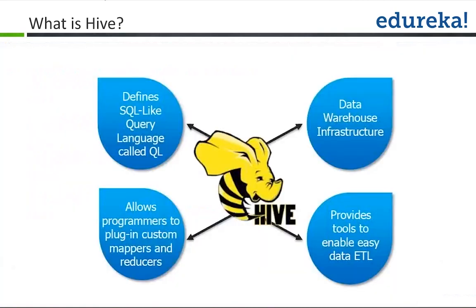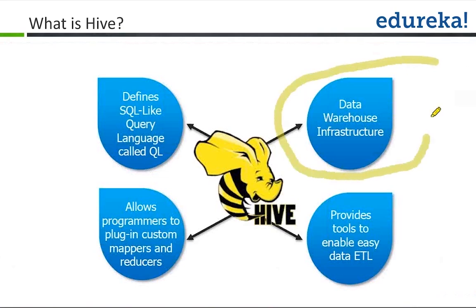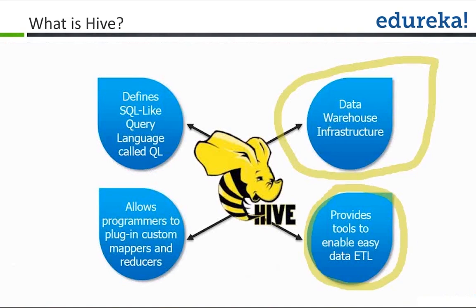Hive looks very promising in terms of the interface it provides to process data, but it has some limitations as well — one being that it handles only structured data. Hive is a data warehouse infrastructure — you create databases, tables, views, and then access the data. It provides an easy way to enable ETL-kind operations on top of Hadoop, so you can easily aggregate and summarize your data as you do in normal ETL processing.